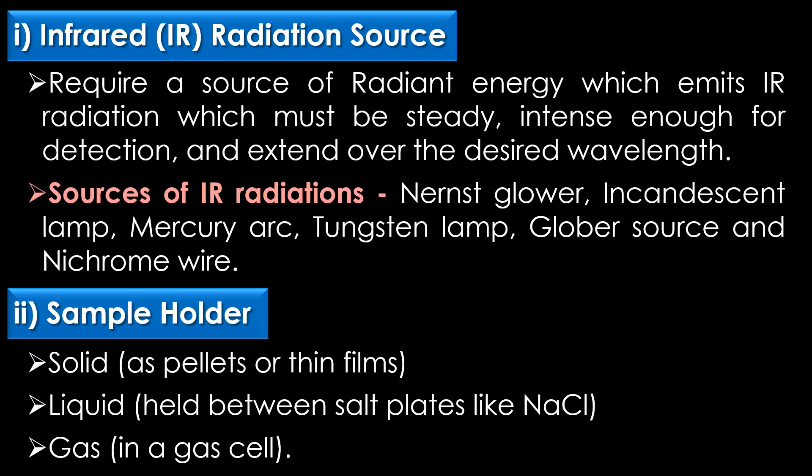The first part is the infrared radiation source. Infrared instruments require a source of radiant energy which emits infrared radiation that must be steady, intense enough for detection, and extend over the desired wavelength. Various sources of IR radiation include the Nernst glower, incandescent lamp, mercury arc, tungsten lamp, globar source, and Nichrome wire.